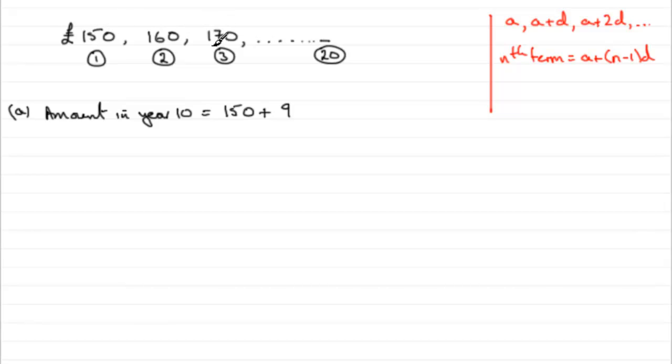We're always putting ten in. The gap between any consecutive terms is always that d value, ten. So, 150 then, plus 90. And that's going to be equal to 240, 240 pounds.